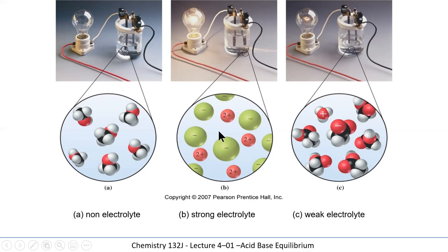If we take something like calcium chloride, which is a strong electrolyte, when it's dissolved in water it breaks apart and forms two-plus ions and one-minus ions. It conducts electricity. On the far right, we have a weak electrolyte like vinegar — most of the molecules stay intact, but a few react with water and create ions. There's a minimum number of ions and a maximum number of molecules, but those few ions give partial conductivity, and the light bulb is partially on.